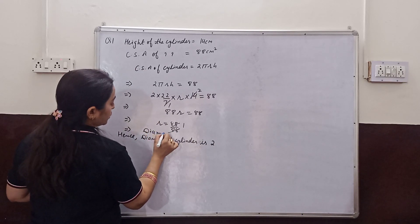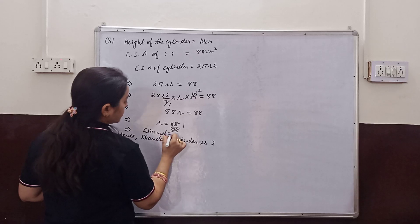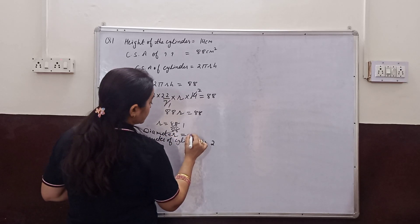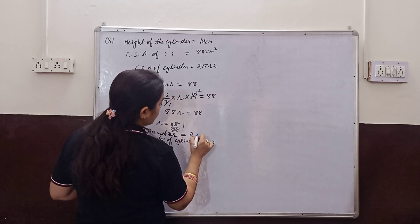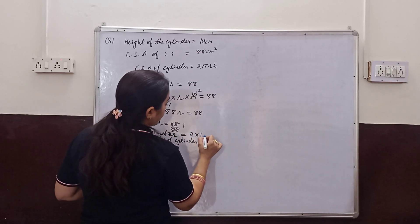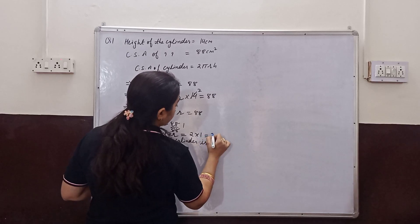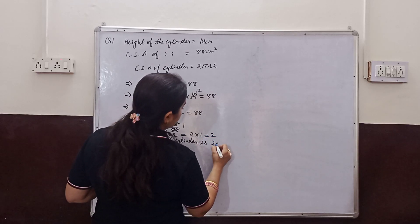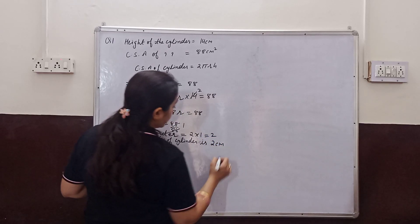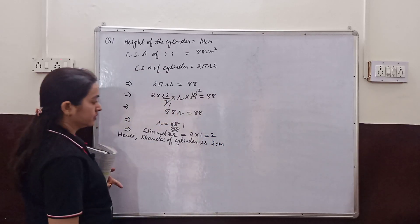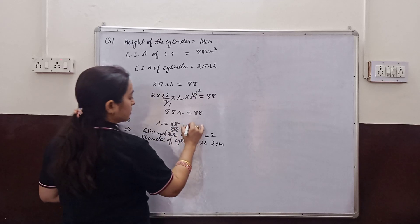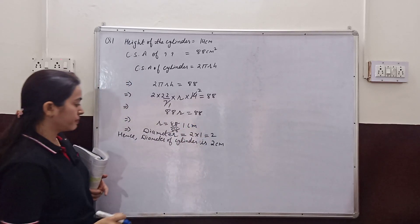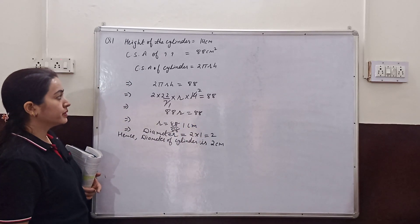Hence, diameter of the cylinder. Diameter is equal to 2 times radius. So the diameter is 2 cm. Okay, clear.